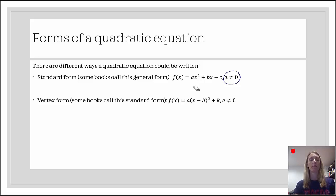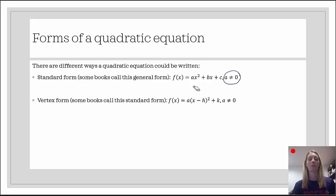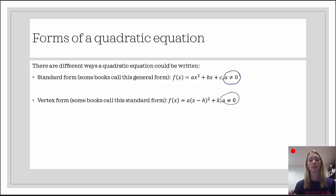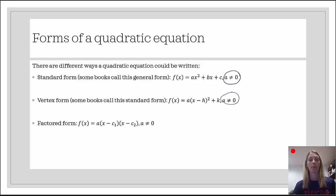Then there's vertex form, which some books refer to as standard form. In vertex form, we have f of x equals a times the quantity x minus h, squared, plus k. Again, a can't be zero, because if we get rid of that term it would be linear. And then there's factored form: f of x equals a times the quantity x minus c sub 1, times the quantity x minus c sub 2. Again, a can't be zero.